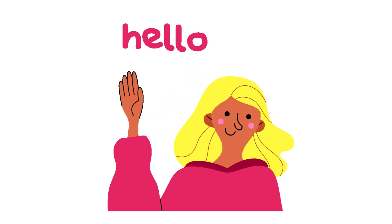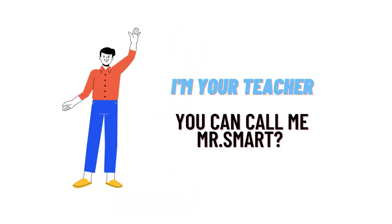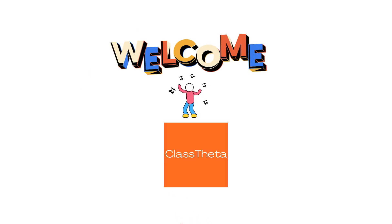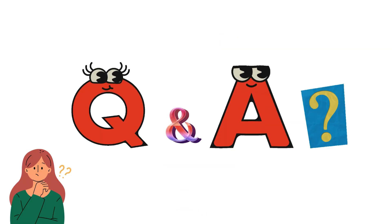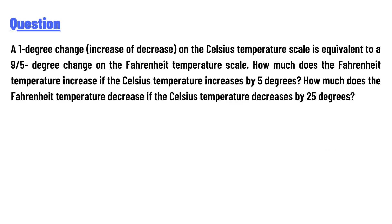Hello everyone, how are you? I am Akrash, your teacher here, and I will teach you different questions and their answers. So I welcome you on ClassTwitter.com. Our today's question is: a one degree change (increase or decrease) on the Celsius temperature scale is equivalent to 9/5 degree change on the Fahrenheit temperature scale.